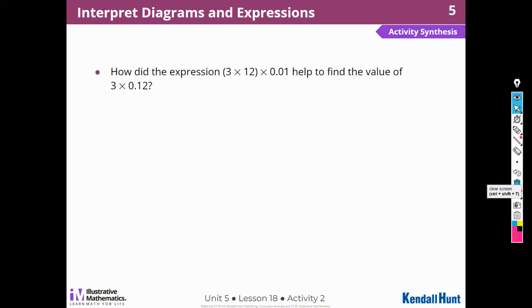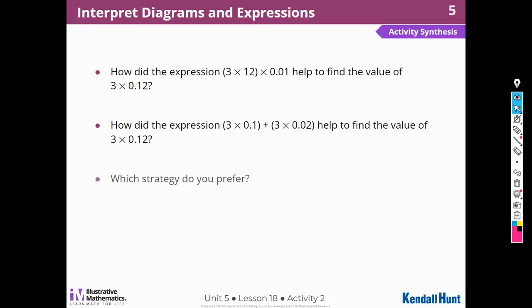How did the expression three times 12 times one-hundredth help you find the value? Well, I was able to just multiply the whole numbers, then notice that the product is that many hundredths, 36 hundredths. How did the expression three times one-tenth plus three times two-hundredths help you find the value? I just multiplied the tenths, and then the hundredths, and then added them together. Which strategy do you prefer? I think I prefer the first one. I like the first strategy because I can just use what I know about a whole number of products, and it will always work.